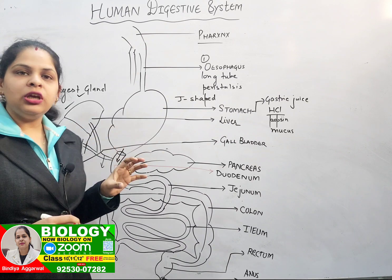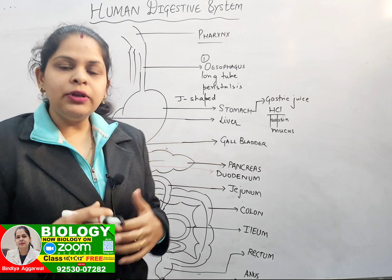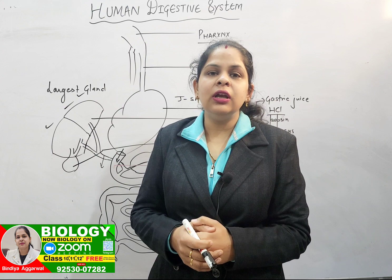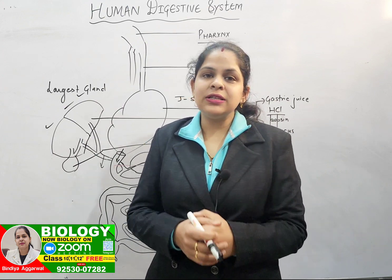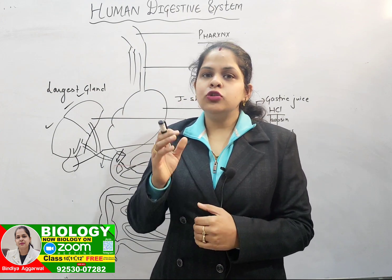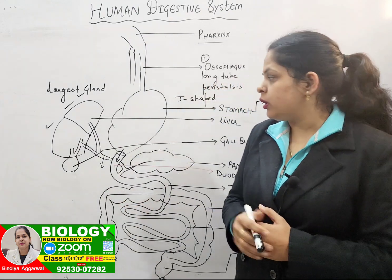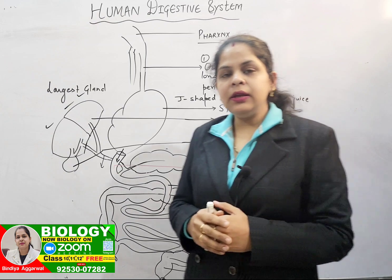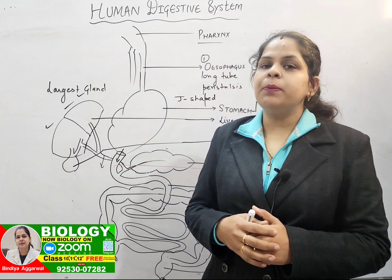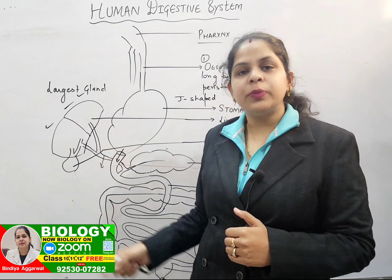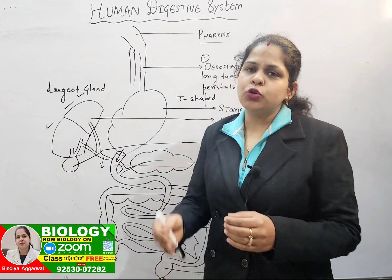Inside the duodenum, two organs release their juices: the pancreas and the liver. The liver secretes bile juice. Bile juice contains enzymes that emulsify fats — that is, they break down large fat globules into smaller globules. The pancreas contains trypsin, which again breaks down proteins. Additionally, lipase is present in the pancreas, which breaks the small fat molecules down into fatty acids and glycerol. Sugars are also broken down here.